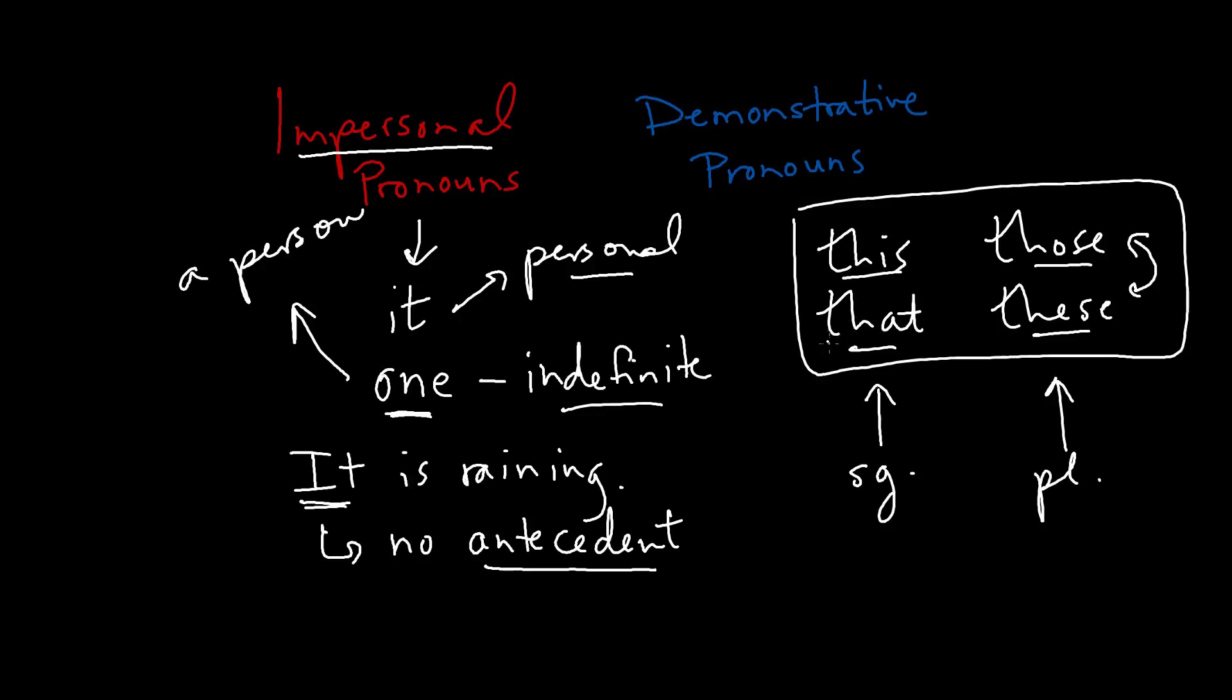The one that's the most confusing is that. So the basic point behind demonstrative pronouns is that we tend to use them to point to things. So we're pointing to things, and you can think of them as demonstrating something. So if you're demonstrating a point, you say this particular one, and so on. Now that is somewhat confusing because that can also be a relative pronoun.